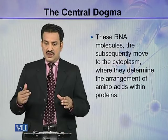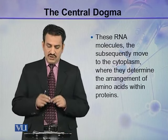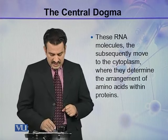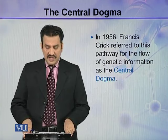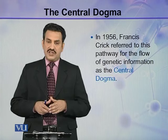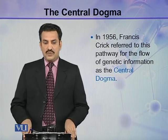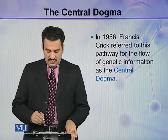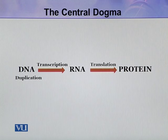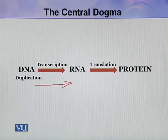In 1956, Francis Crick referred to this pathway for the flow of genetic information as the central dogma. This flowing pathway of information is called the central dogma. Here you can see that information flows from DNA to RNA during the process of transcription, and then from RNA to proteins during the process of translation.